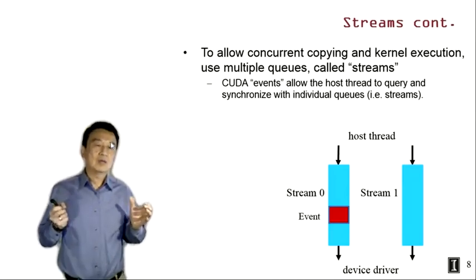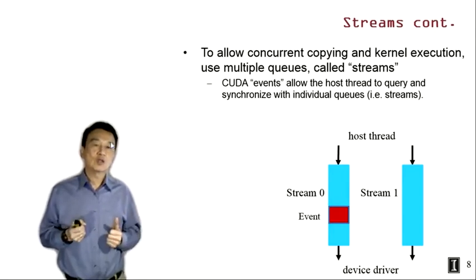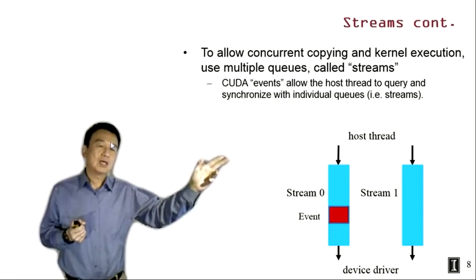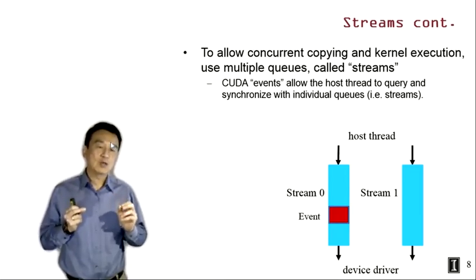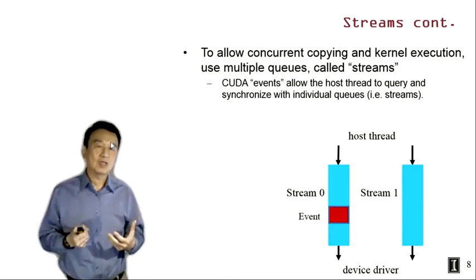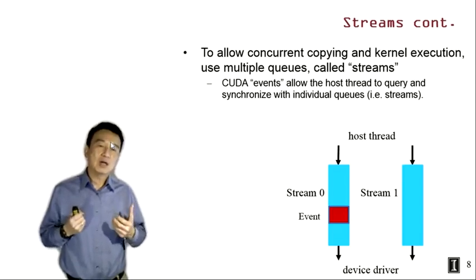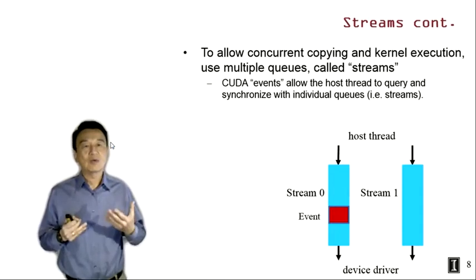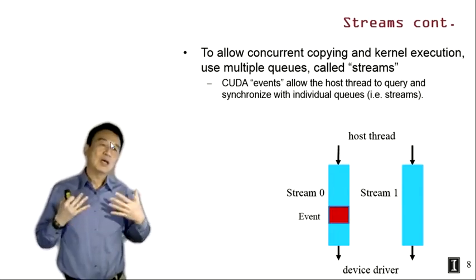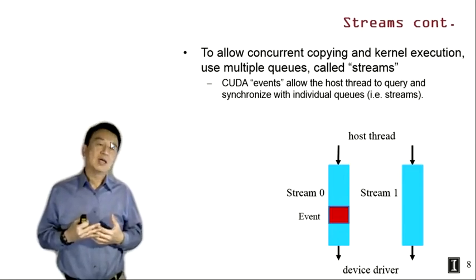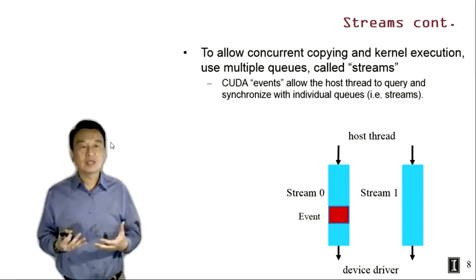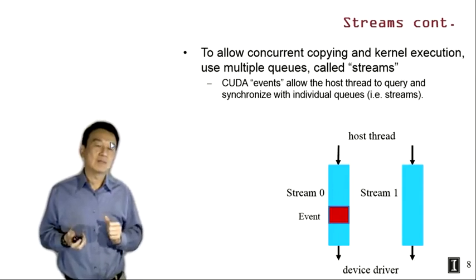To allow concurrent copying and kernel execution, we need to use multiple queues or multiple streams. The host can label tasks or requests with different stream identifiers, so they go into different queues, and operations in different queues now have an opportunity to execute in parallel. Whenever we have parallelism, we need to be able to synchronize. As we learned in data parallelism, we need synchronization to properly coordinate execution. In task parallelism in CUDA, we have events that allow the host thread to query and synchronize with individual queues or streams — these are called CUDA events.